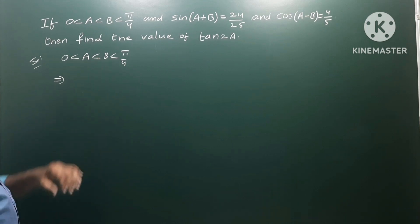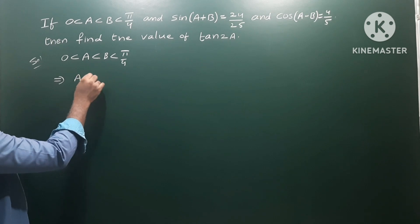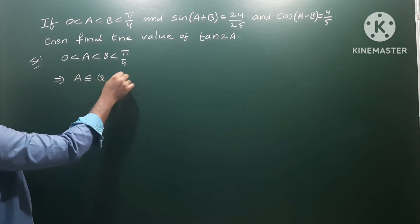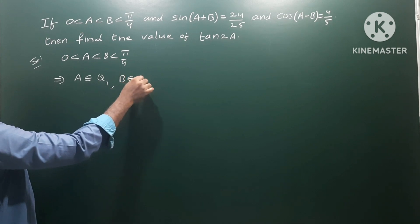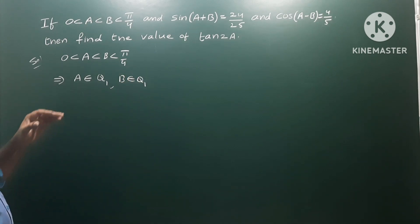Now we have angles in the first quadrant, so we can confirm. Therefore A belongs to Q1, and B also belongs to Q1. At the same time, A is less than B.